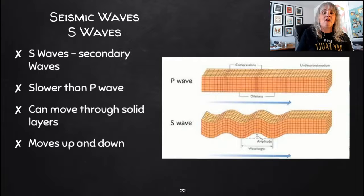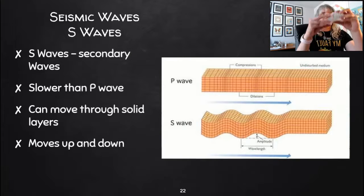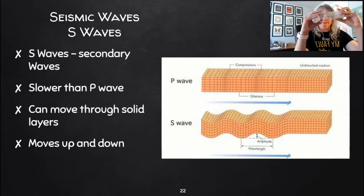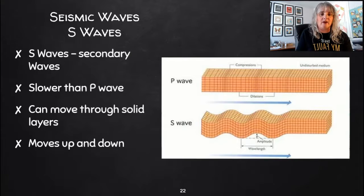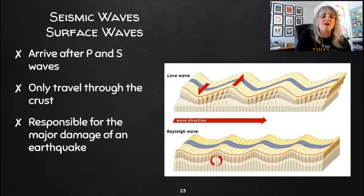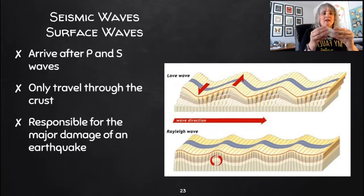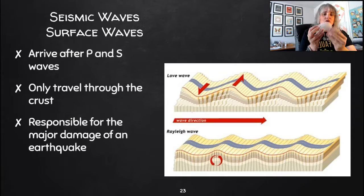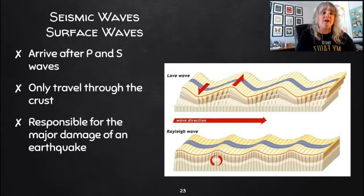The second type of wave is called an S wave, or secondary wave — P equals primary, S equals secondary. S waves are slower than a P wave and can only move through solid layers. They move up and down. The final type of wave is called surface waves, and they are the slowest waves to arrive. They can only travel through the crust and cannot go through any other layers of the Earth, but they are responsible for the majority of the damage of an earthquake. A Love wave goes like this, and a Rayleigh wave is kind of like the motion of an ocean wave. Those two types of surface waves cause the major destruction in an earthquake.